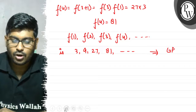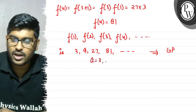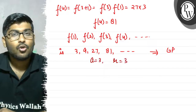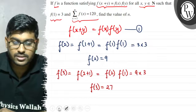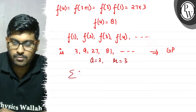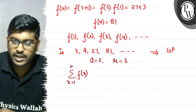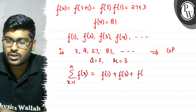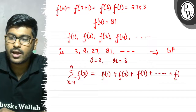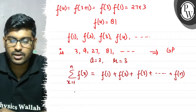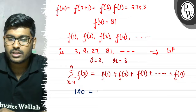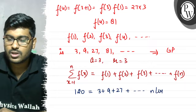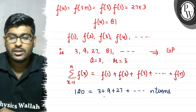It is a GP. The first term is 3, and if we see the common ratio — 9 divided by 3 — it becomes 3. The common ratio is also 3. So sigma f(x) for x equals 1 to n, that is f(1) + f(2) + f(3) and so on up to f(n), equals 120. That is 3 + 9 + 27 up to n terms. This is a GP with first term 3 and common ratio 3.